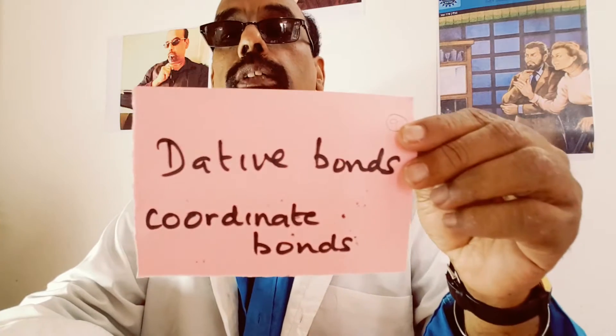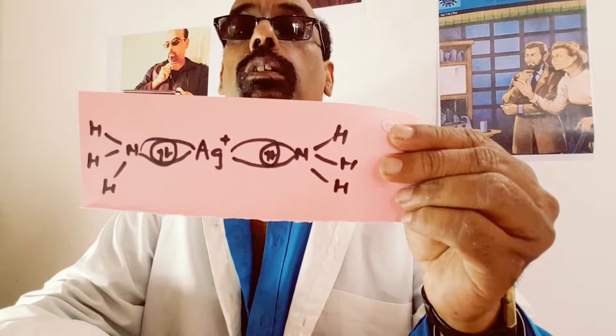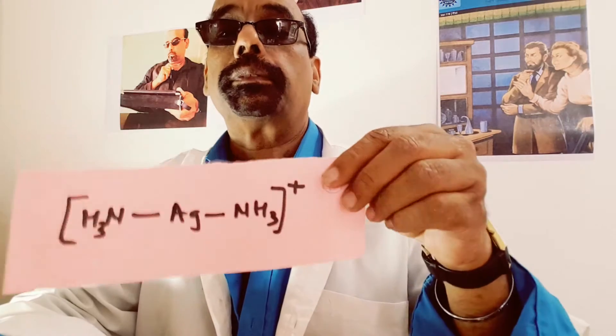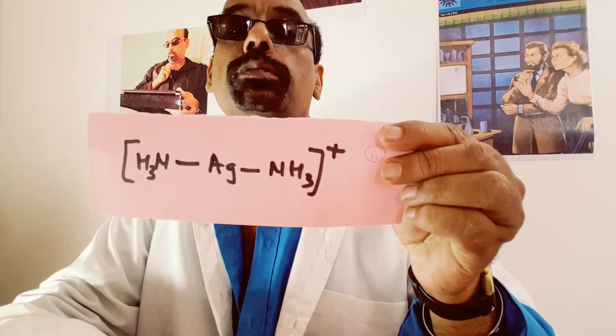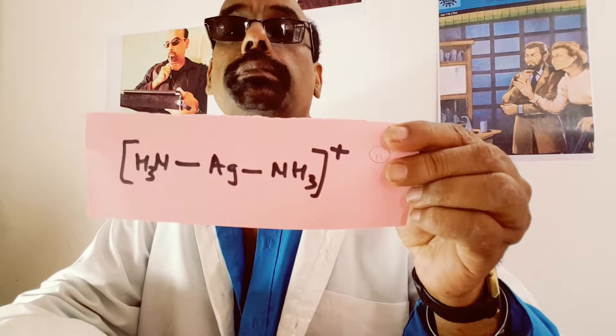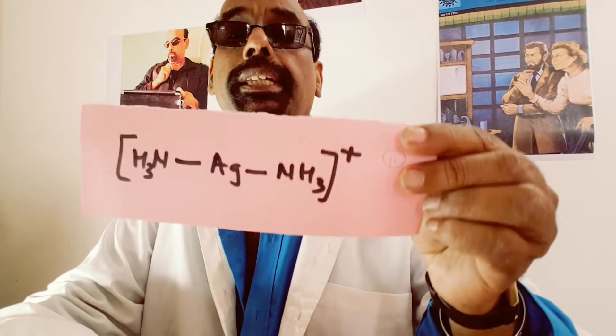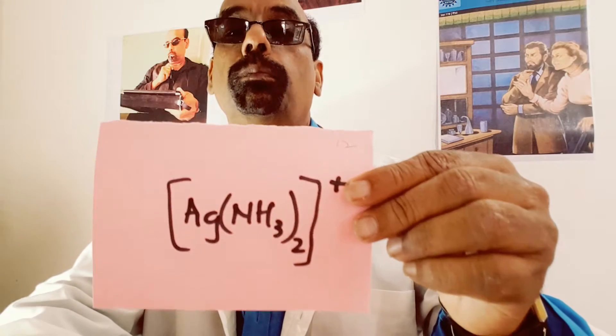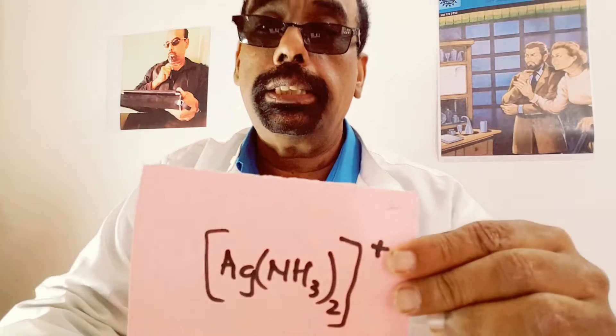Two dative bonds, also called coordinate bonds, are formed. This shows the formation of two dative bonds with ammonia on both sides of the silver ion. The NH₃ bonded to the silver ion is linear. The overall charge is positive, because the silver ion is positive. It can be represented as [Ag(NH₃)₂]⁺.